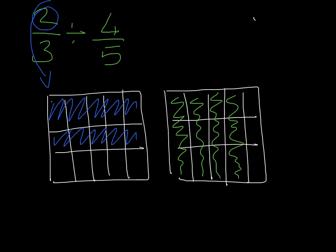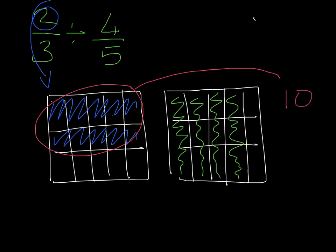The really cool thing about division and the area model is that the first building gives you the value of your new numerator. When you count the number of rooms in this building, it gives you the value of your new numerator. Counting: 1, 2, 3, 4, 5, 6, 7, 8, 9, 10. So my new numerator is 10.